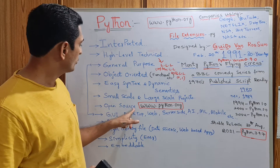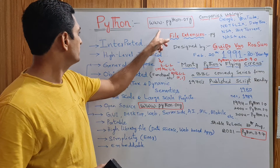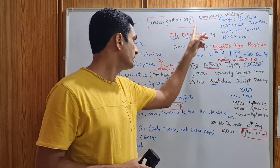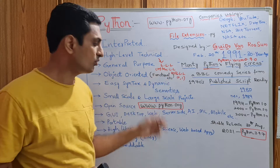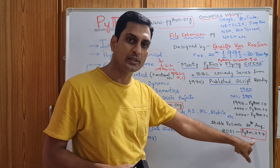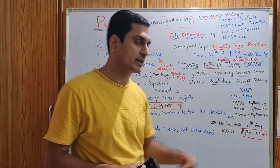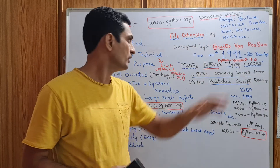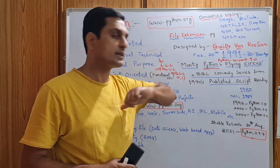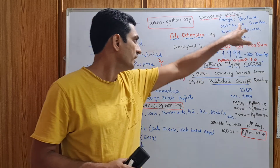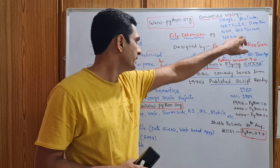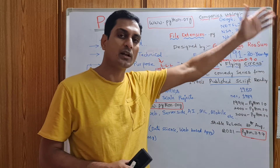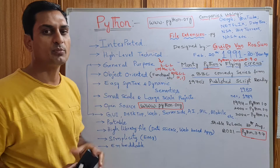Python is open source. The official website is www.python.org, from which you can download the latest version, Python 3.9.7. Major companies using Python include Google, YouTube, Netflix, Dropbox, NSA, BitTorrent, and NASA, among others.